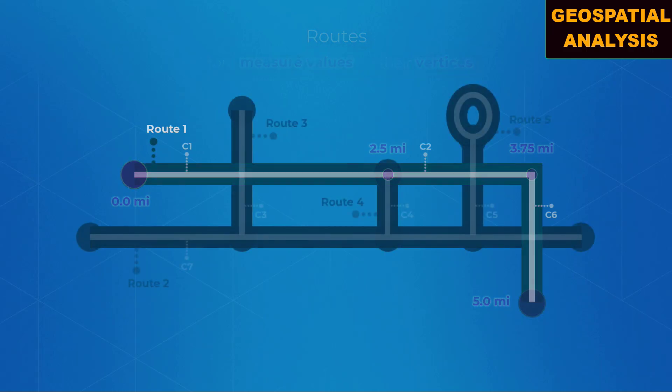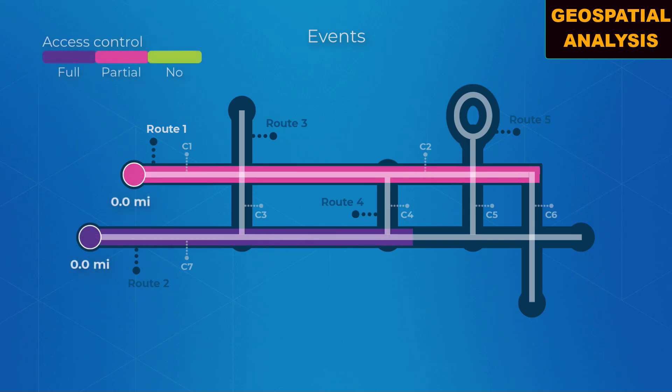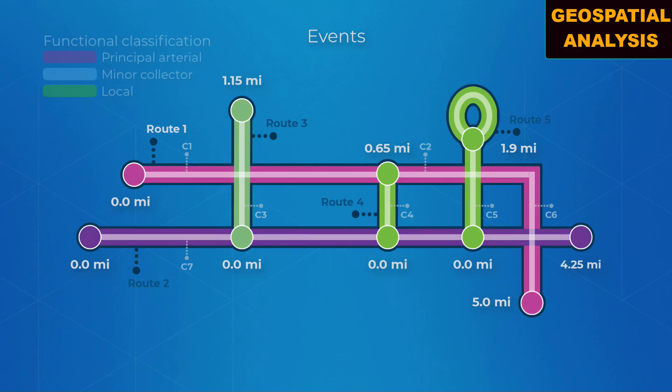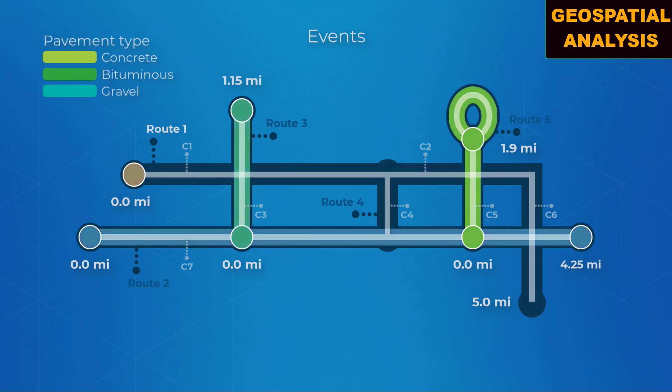You can use these measures to determine where events are located along a route. Access control, functional classification, and pavement type are all common examples of an event.